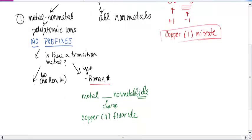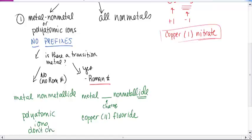If there's no Roman numeral, it's actually even simpler because we don't need to figure out the charge. So you simply are going to write the name of the metal, and then the name of the non-metal and change the ending to -ide. There's no need for a Roman numeral. Polyatomic ion names don't change, so we don't change the ending on those.